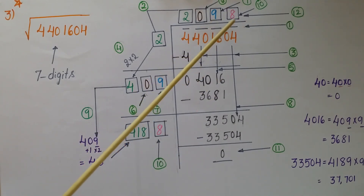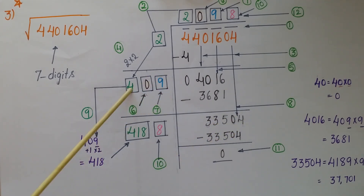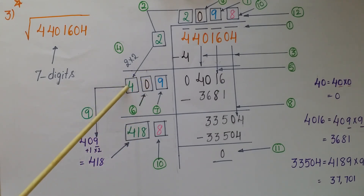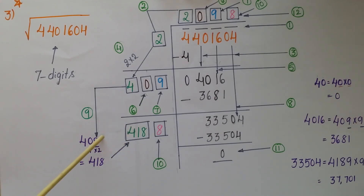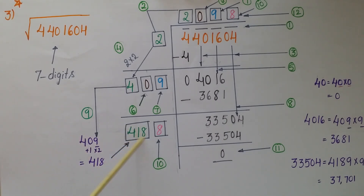Bring down the next bar digits 04, making the number 33504. Now double the last digit of the current divisor 409: 9 × 2 = 18, so write 8 as the units digit and carry 1 over; 1 + 0 = 1 and 4 stays, giving the new divisor base 418.